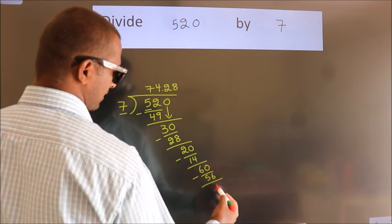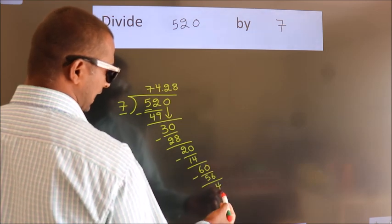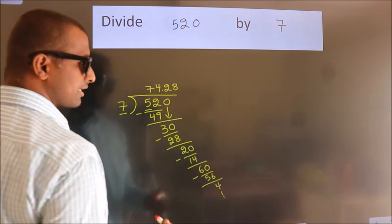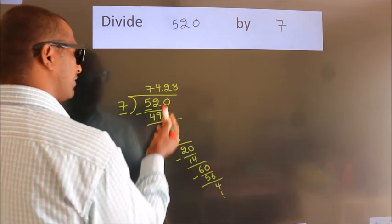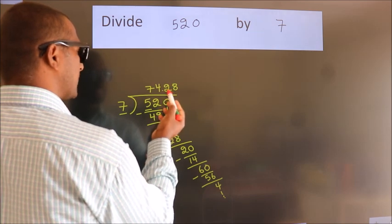Now we subtract. We get 4. And the division continues. It is enough if we do up to 2 decimal places.